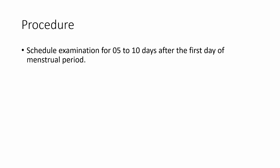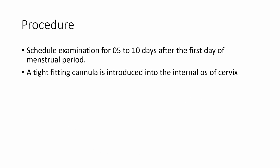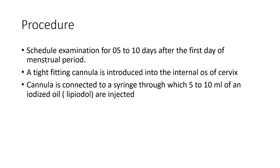Usually the procedure is completed within 3 to 5 minutes. Histosalpingiography is performed by instilling radio-opaque contrast iodine oil into the uterine cavity while using fluoroscopy with intermittent still images for documentation. A tight cannula is introduced into the internal os of the cervix. The cannula is connected to a syringe through which 5 to 10 ml of the iodine oil are injected. Then the X-ray is taken. The first X-ray is known as the scout X-ray, where the normal X-ray is taken. After that, we take at least 3 to 4 X-rays during the procedure, and at the end, when the dye spills into the peritoneal cavity, we take the final X-ray.